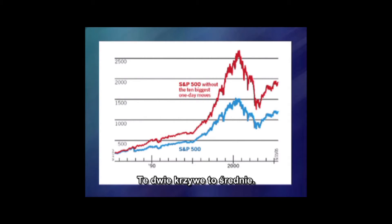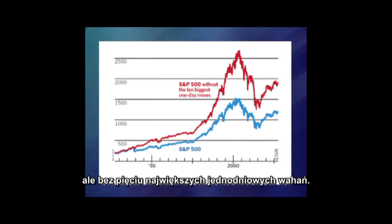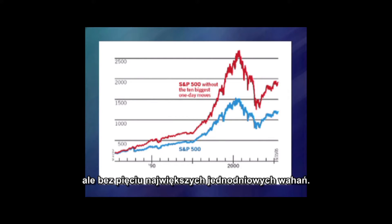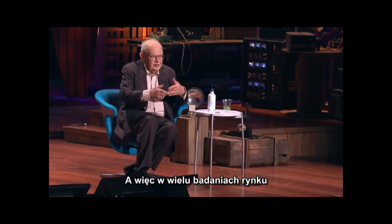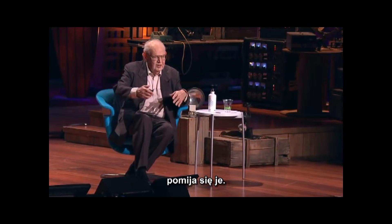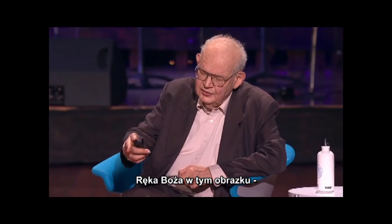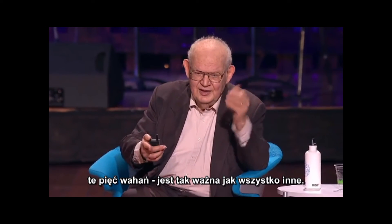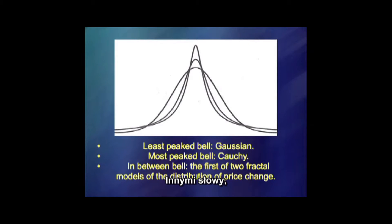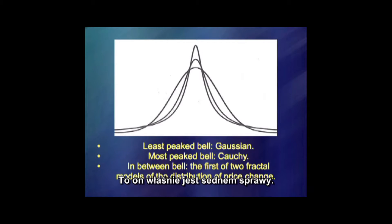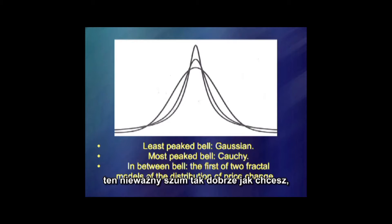These two curves are averages — the Standard and Poor, the blue one, and the red one is Standard and Poor from which the five biggest discontinuities are taken out. Now, discontinuities are a nuisance, so in many studies of prices one puts them aside — acts of God — and you have the little nonsense which is left. The acts of God on this picture: five acts of God are as important as everything else. In other words, it is not the acts of God that we should put aside — that is the meat, the problem. If you master these, you master price; and if you don't master this, you can master the little noise as well as you can, but it's not important.